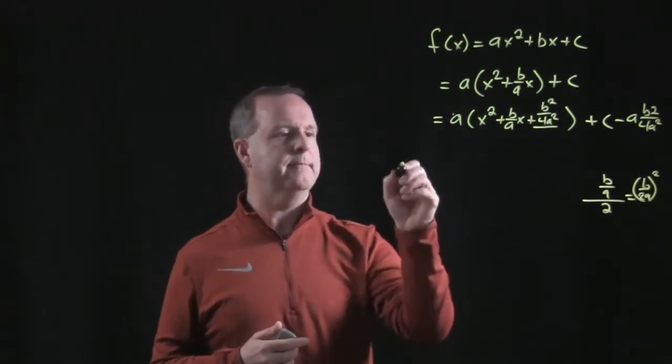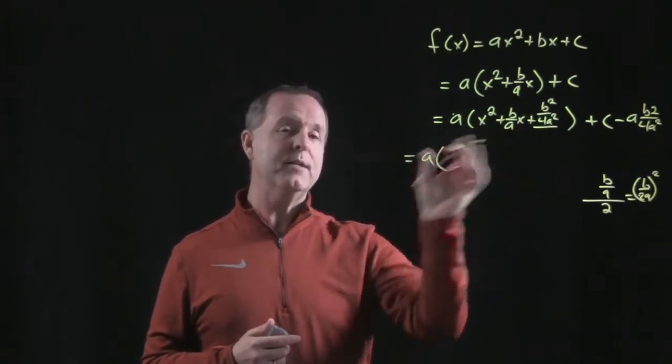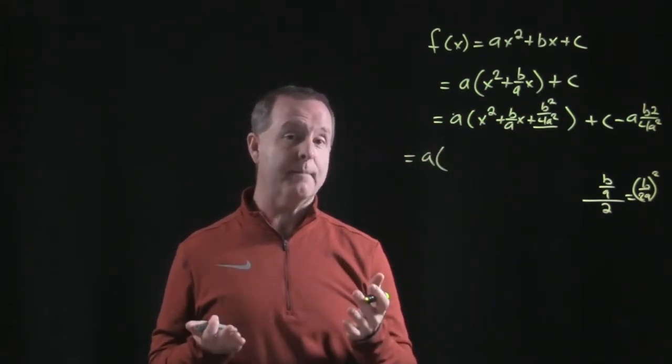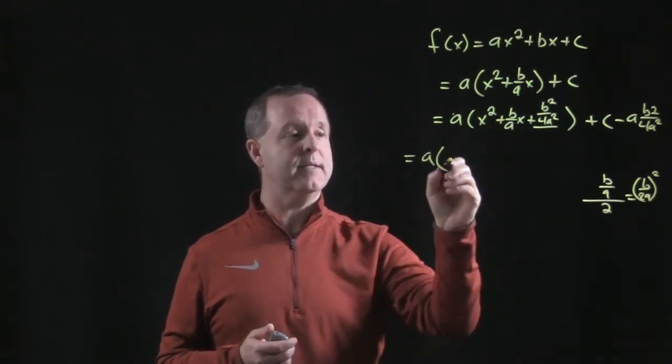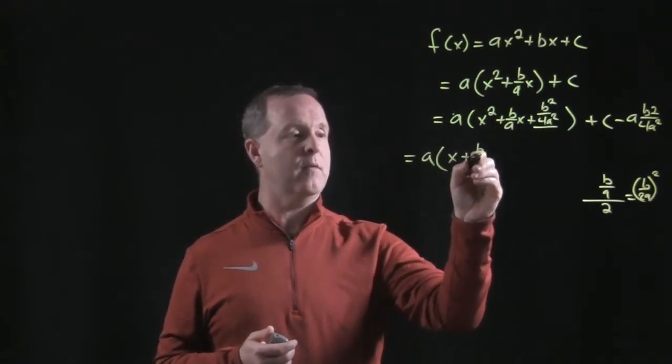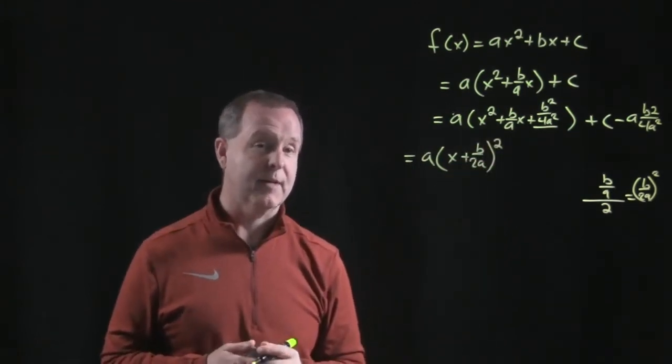All right, let me just kind of clean up the work a little bit. I'm going to clean up in two places. Why do we do this? So we can create a perfect square. So what times itself produces this? That's x plus b over 2a. Kind of cool.